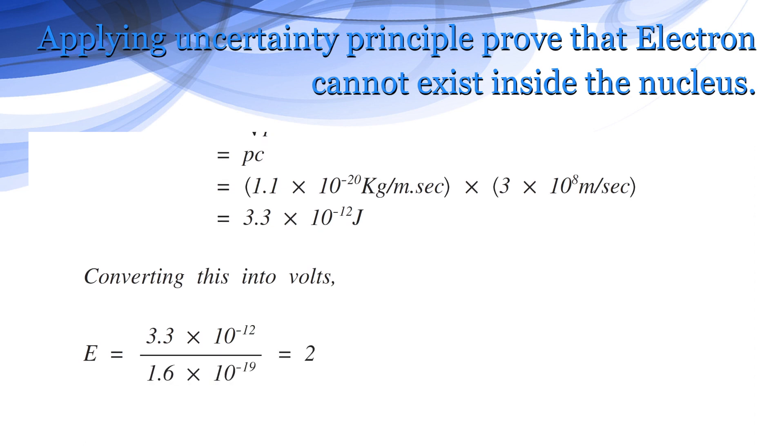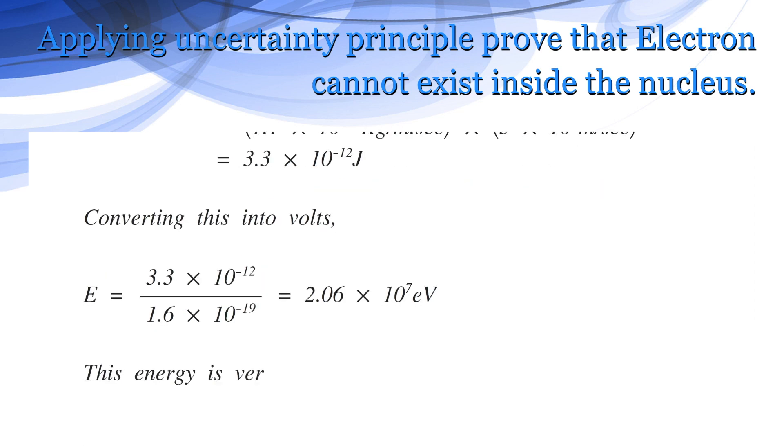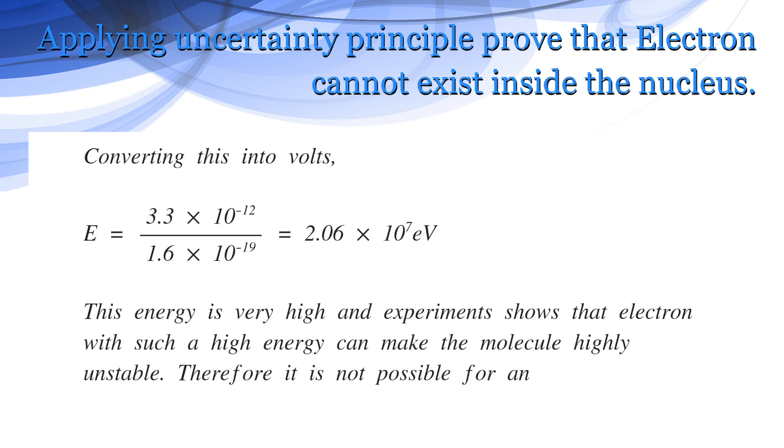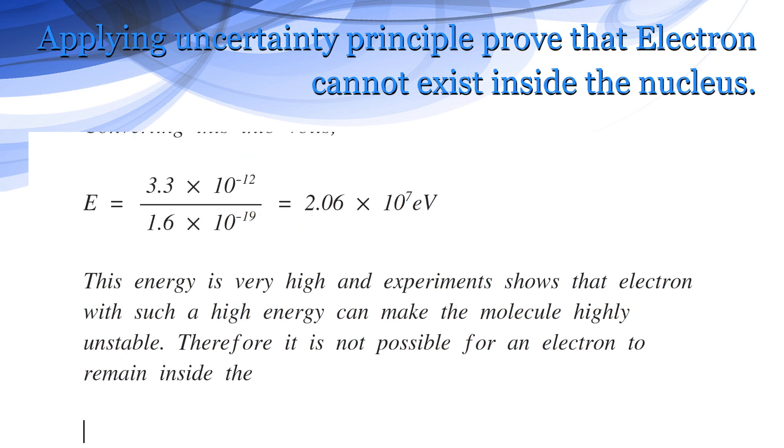It comes to 2.06 into 10 to the power 7 electron volts. This energy is very high, and experiment shows that electrons with such high energy can make the molecule highly unstable. Therefore, it is not possible for an electron to remain inside the nucleus.